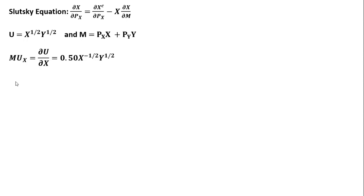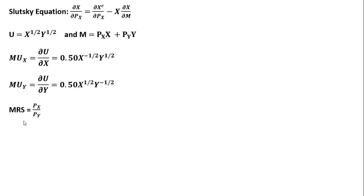The first thing we're going to do is derive the demand for good x. We get the marginal utility for good x and the marginal utility for good y by taking partial derivatives. When the consumer maximizes utility, the marginal rate of substitution equals the ratio of the price of good x to the price of good y, where the marginal rate of substitution is the marginal utility of good x divided by the marginal utility of good y.